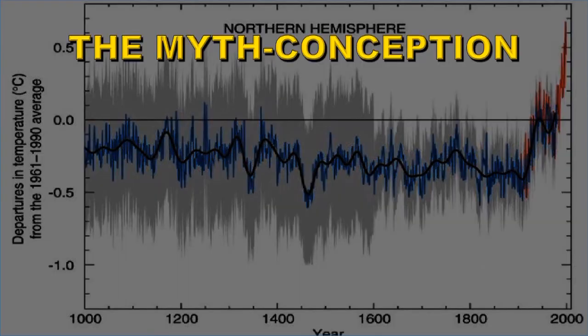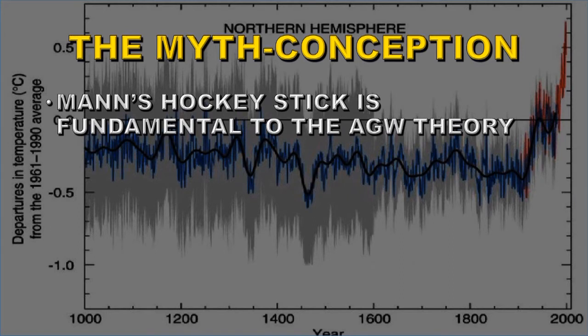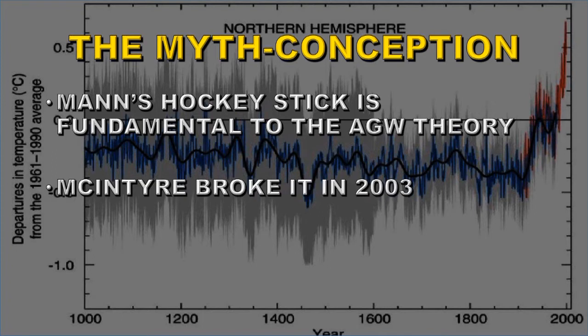So where's the misconception here? Well, first of all they claim that Mann's hockey stick is fundamental to the anthropogenic global warming theory, and if the hockey stick proves to be incorrect then the whole anthropogenic global warming theory falls apart. And in 2003 a guy called McIntyre wrote a paper saying exactly that — namely that the analysis methods used by Mann were statistically wrong and the data that he used predisposed the curve to be taking a hockey stick shape.